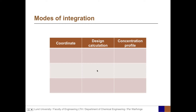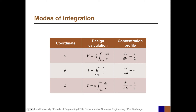We can integrate this mass balance in various ways. In volume coordinates, the design calculation gives V = q · ∫(C_in to C_out) dC/r, and the concentration profile is dC/dV = r/q. In residence time coordinates, θ = ∫(C_in to C) dC/r, and dC/dθ = r. In length coordinates, L = v · ∫(C_in to C) dC/r, and dC/dL = r/v.